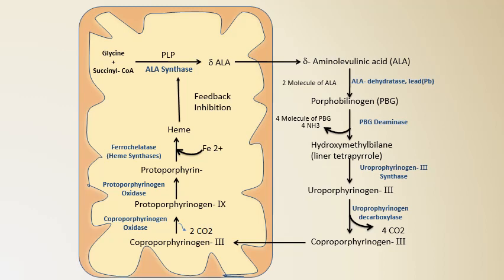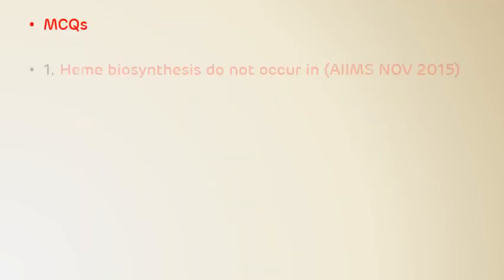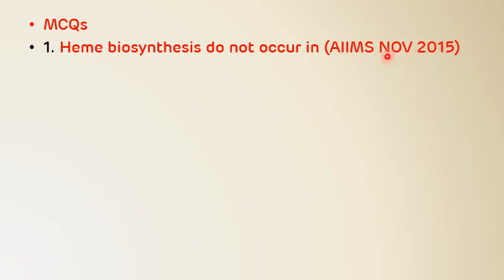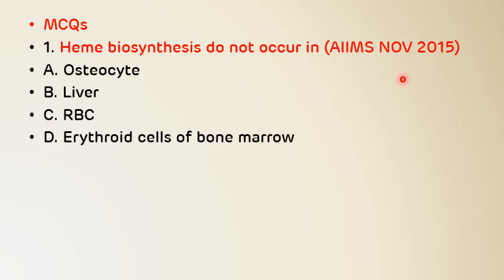Now let's see a few multiple choice questions from various entrance exams. The first question, asked in AIIMS November 2015: 'Heme biosynthesis does not occur in which of the following?' The options are osteocyte, liver, RBC, and erythroid cells of bone marrow. The answer is C — mature RBCs, because heme synthesis does not occur in mature erythrocytes.